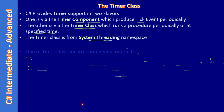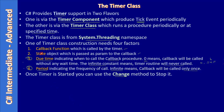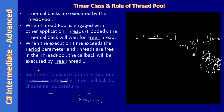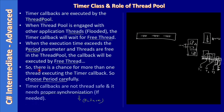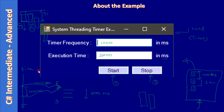First, we learned about the Timer class, the callback function, due time, and period. Next, we talked about the thread pool and how it allocates threads to execute the timer callback function, and how the timer callback function is seen as a task. Then we discussed the example in the previous video.